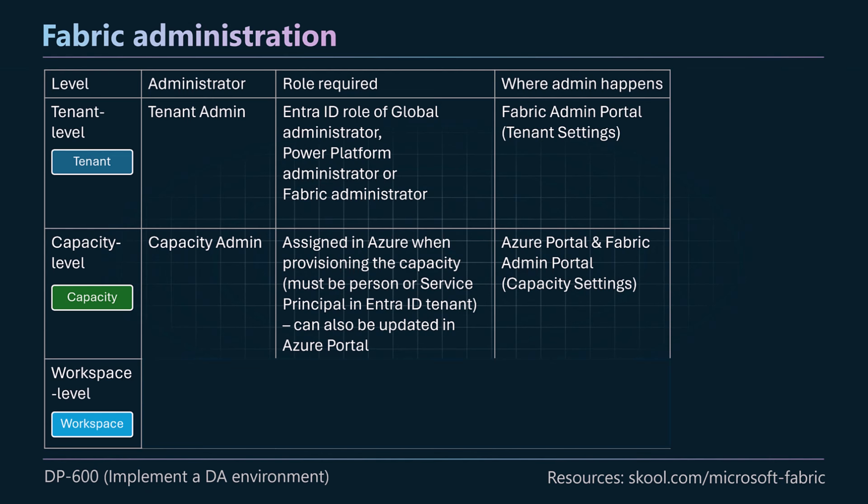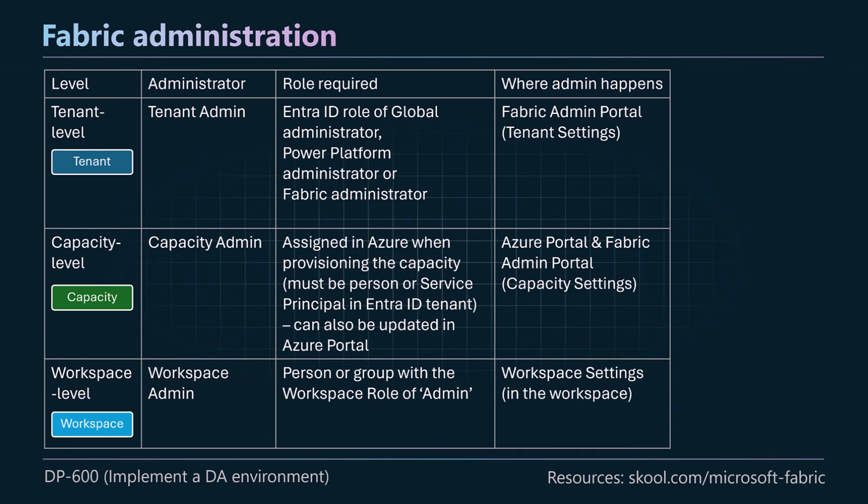One level down at the capacity level, the capacity admin is assigned when you create a new Fabric capacity in Azure. Administration at that capacity level is done either in the Azure portal or in the Fabric admin portal under capacity settings. At the workspace level, you'll have a workspace admin — a person or group with the workspace role of admin — who works primarily in workspace settings and manage access.